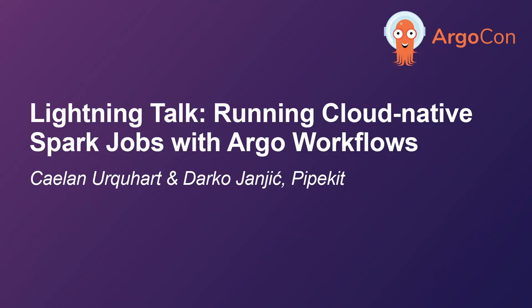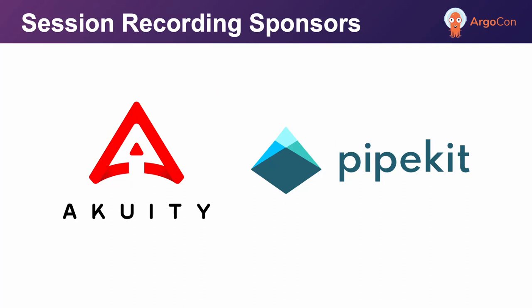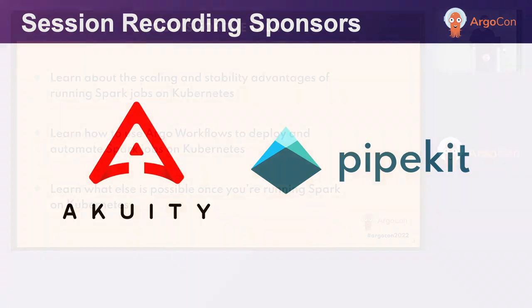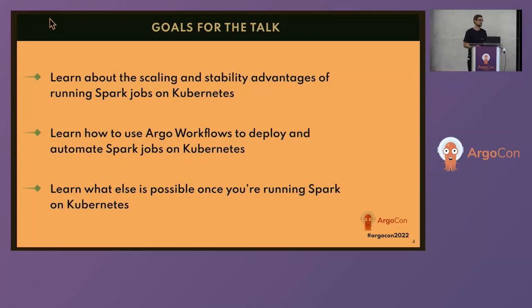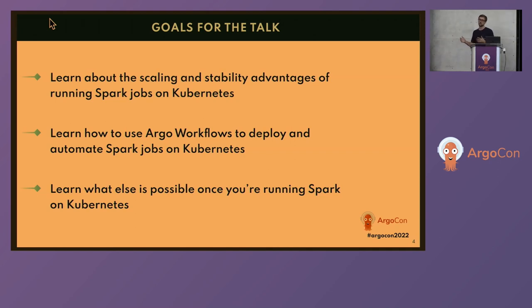Today we'll be running some Spark jobs on Kubernetes with Argo Workflows. We'll be learning about the scaling and stability advantages of running Spark jobs on Kubernetes versus traditionally running them on Yarn. We'll learn how to use Argo Workflows to deploy and automate Spark jobs on Kubernetes, and not just run one job, but run multiple Spark jobs successively or in parallel.